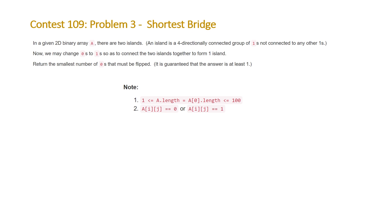The constraints for our problem are that the dimension of our 2D grid will be between 1 and 100, and all of the values of the cells in our 2D grid will be either 0 or 1, which is why they're calling it a 2D binary array.